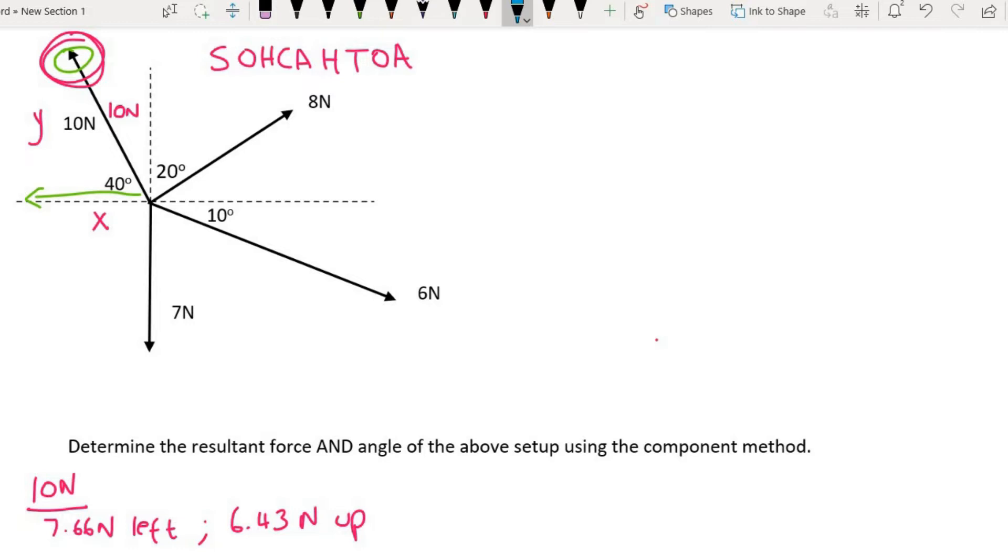Next we are going to do the 8 newton. The triangle that we use would be something like this. I'll quickly draw it out. The 8 newton is the hypotenuse. Now be careful guys, this is 20 degrees. If you minus that from 90 then this little corner would be 70.